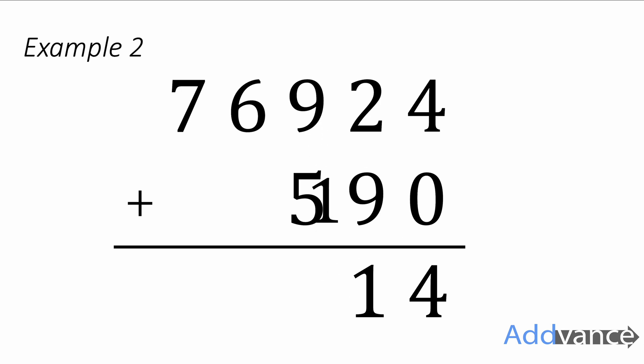We carry over the one. So we add the one down here, we carry over the one. One plus nine plus five is fifteen. Put the five there and put the one up top because we're carrying it over.